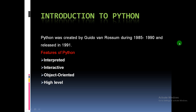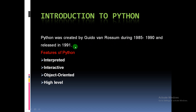In this first session, we will discuss the introduction to Python. Who invented Python? Python was invented by Guido van Rossum during 1985 to 1990 and released in the year 1991.